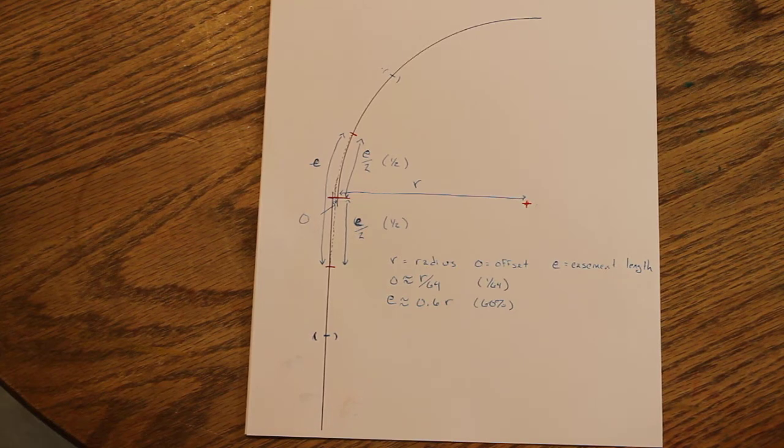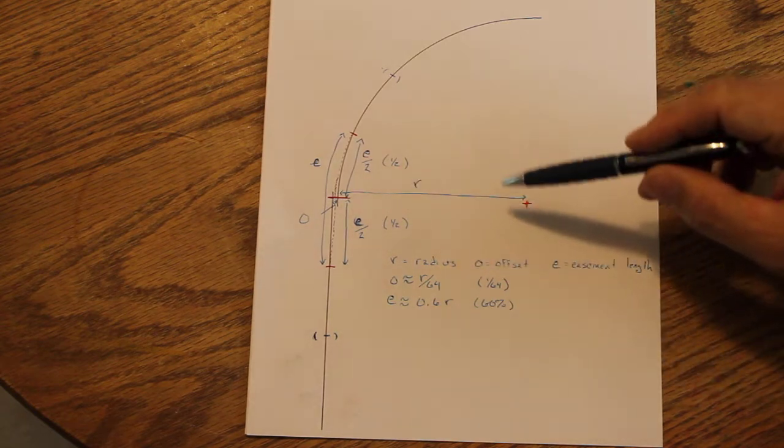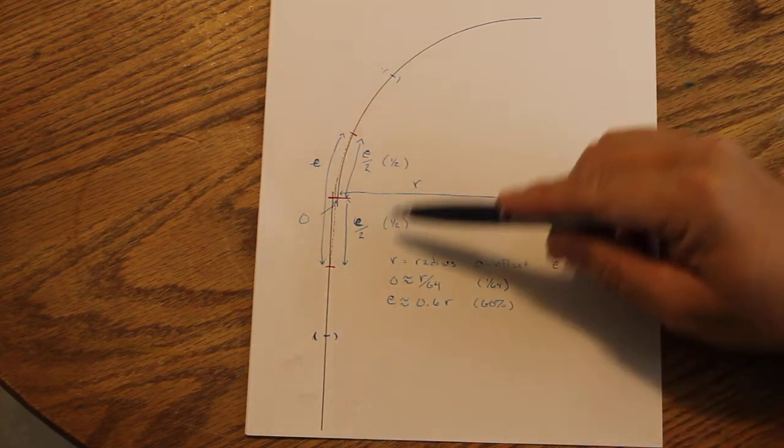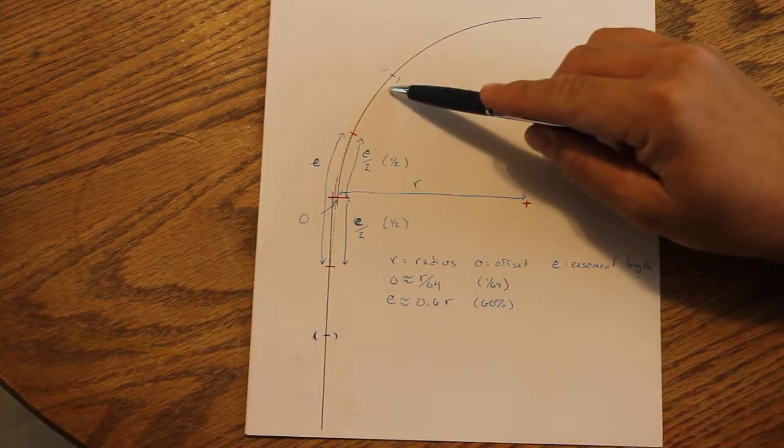So what I want you to understand is this. Here I have laid out—this is not perfectly to scale, but you get the idea—I've laid out a curve with the tangent, the circle curve.